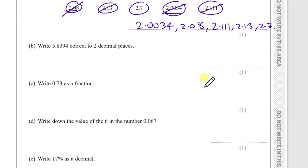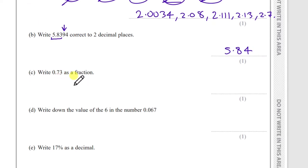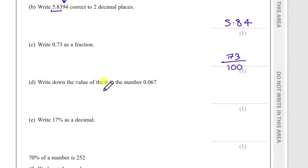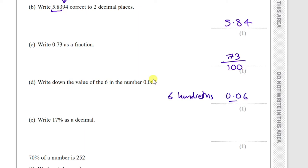Part (b): write the number correct to two decimal places. Underline the first two decimal places and look at the third digit — it's 9, so round up: the answer is 5.84. Part (c): write 0.73 as a fraction — that's 73/100. Part (d): the value of the 6 in 0.067 — the first zero is tenths, next is hundredths, so 6 is six hundredths, or 0.06.